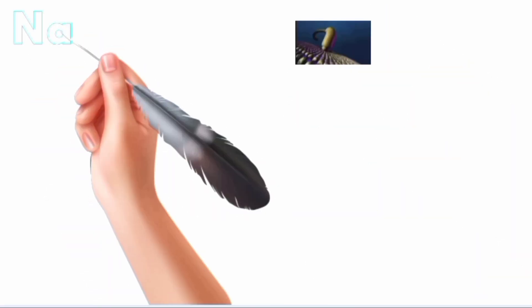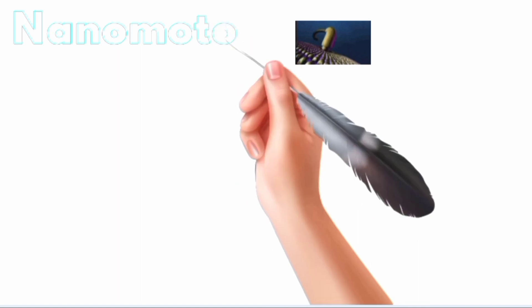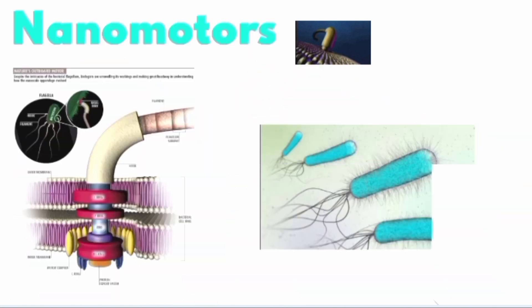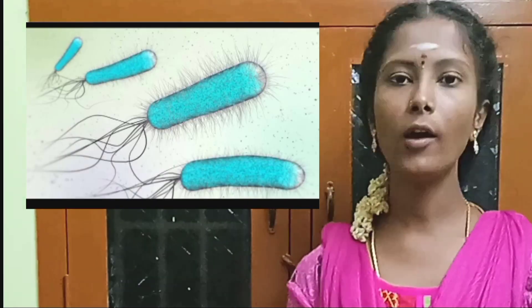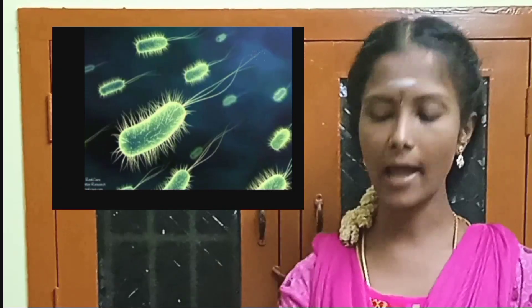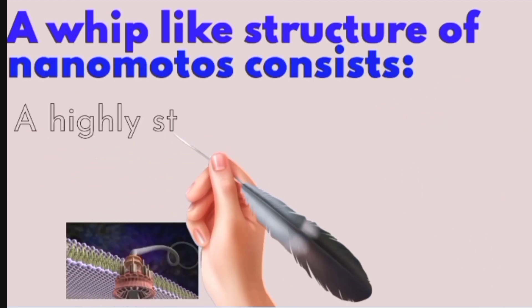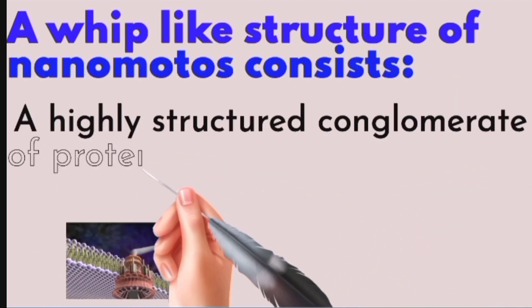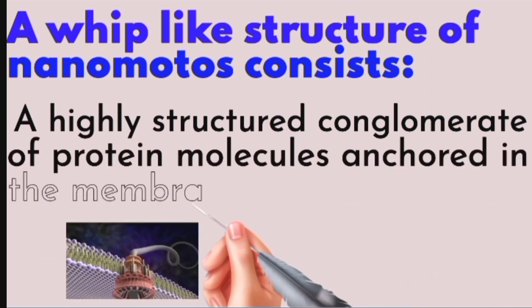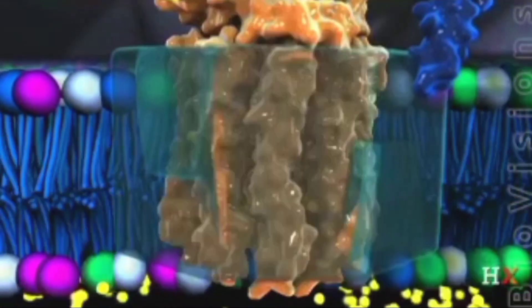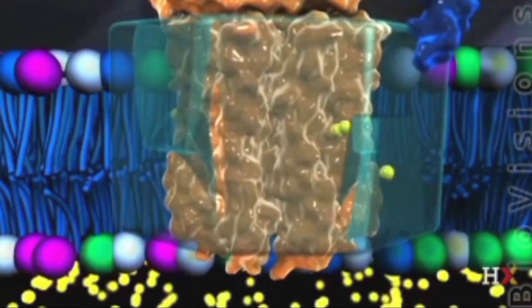Nano-motors can be used in biological aspects, for example the flagella motor. It is used to find bacteria. Flagella are long, thin, blade-like structures. The whip-like structure of a nano-motor consists of a highly structured complex of protein molecules and chloride in the membrane of the bacteria. A motor has a shaft and the structure above the shaft resembles an armchair.